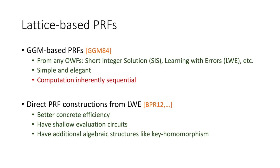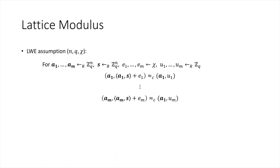However, all existing constructions of direct LWE-based PRFs have one downside: they all rely on LWE where the modulus must be super-polynomially large with respect to the security parameter. To explain the issue with the modulus, let me recall the LWE assumption. The LWE problem is parameterized by three parameters: the dimension n, the modulus q, and a noise distribution typically denoted by chi.